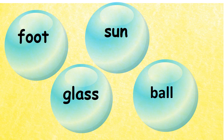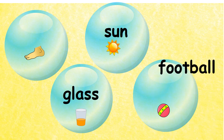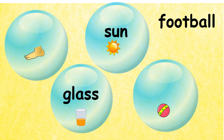Let's look at the words we have here. We have foot, sun, glass, and ball. Take a minute, look at them, and we are going to make a compound word. The two root words which go together are foot and ball. That will give you football.